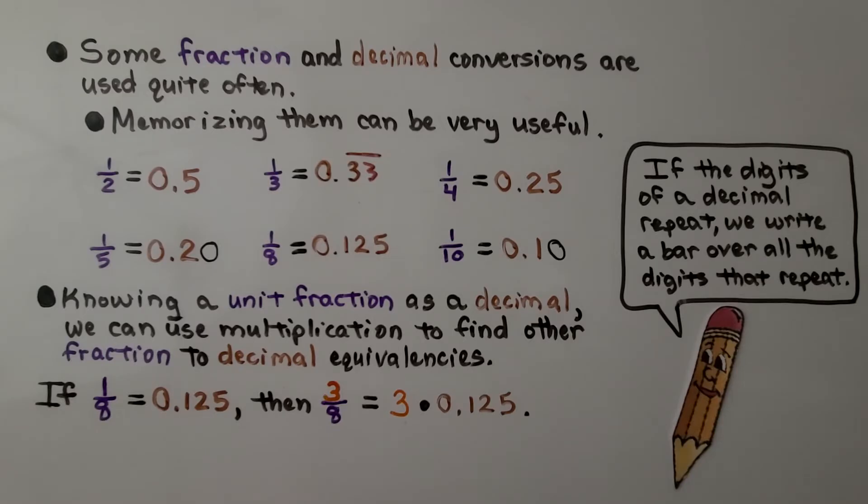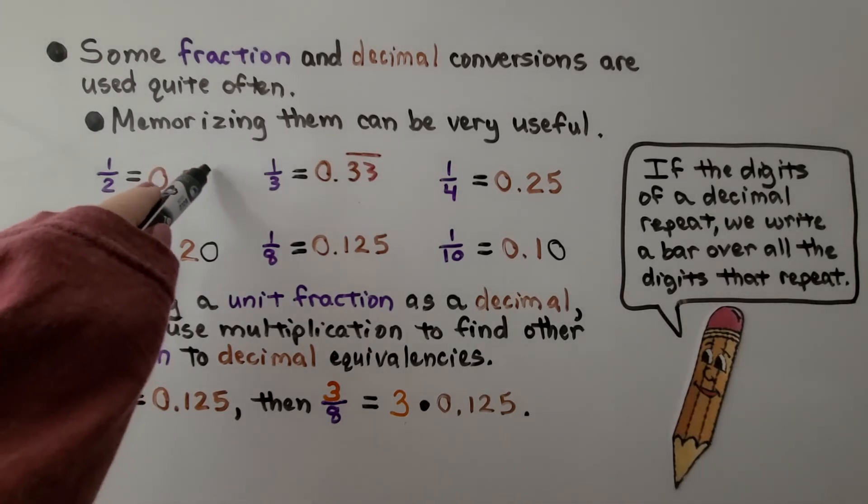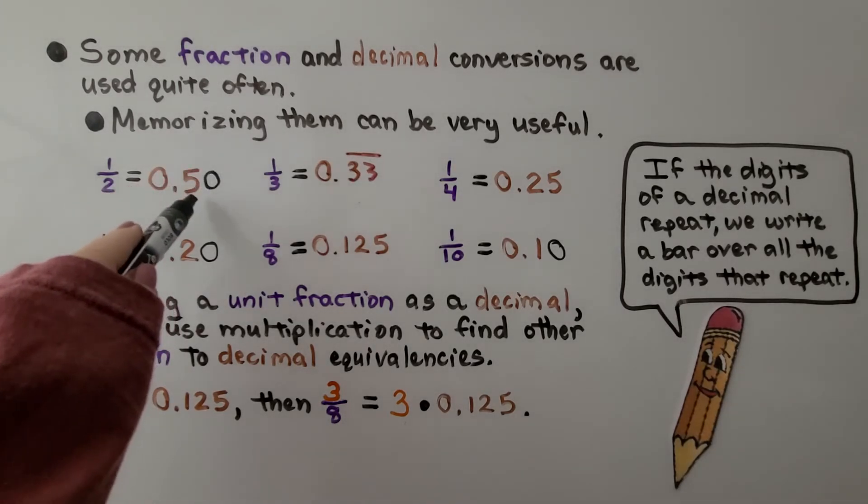Some fraction and decimal conversions are used quite often. There's a lot of engineers and mathematicians that just memorize them. Memorizing them can be very useful. We can remember that a half is 0.5. We can even say it's fifty-hundredths.